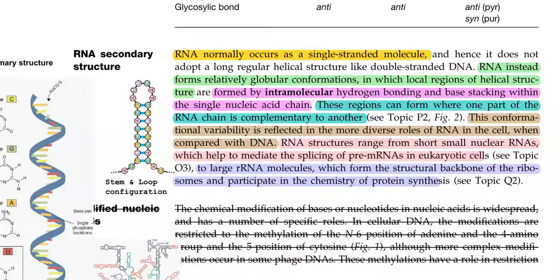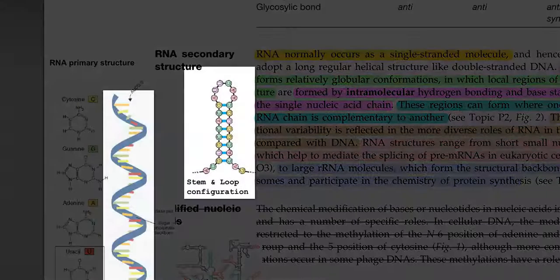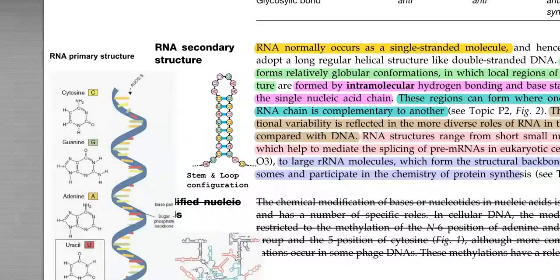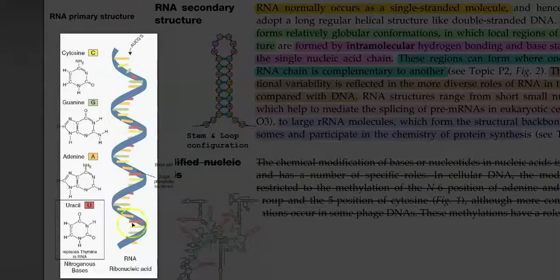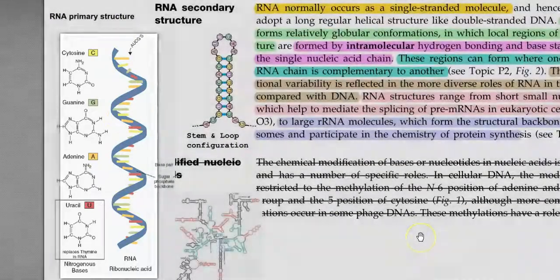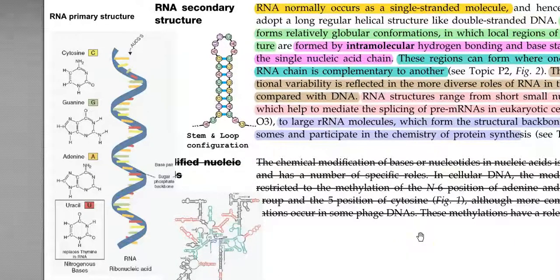Dear students, in this lecture we are going to see about the primary and secondary structure of RNA. Looking at the left hand side, this is the RNA's primary structure. RNA is a single stranded molecule unlike that of DNA. Another difference in RNA is the type of sugar that makes up its nucleotide — it is a ribose sugar instead of the deoxyribose sugar of DNA.